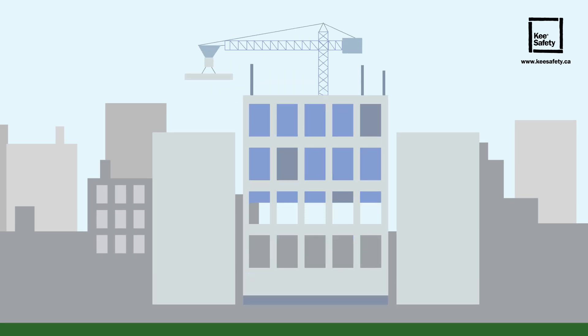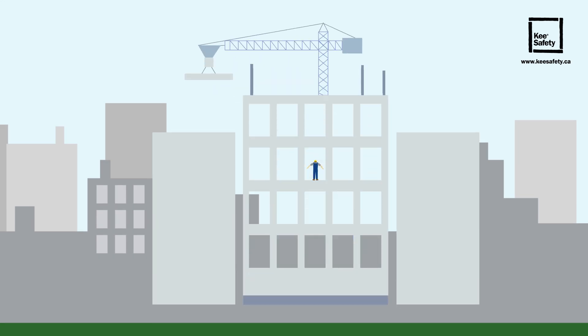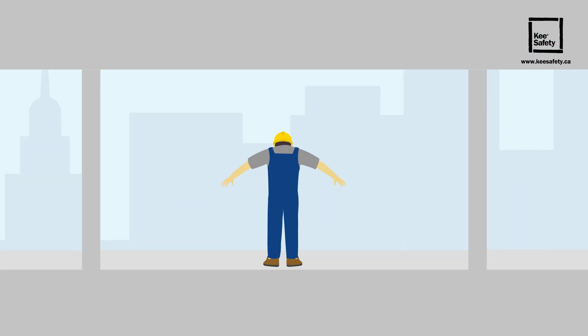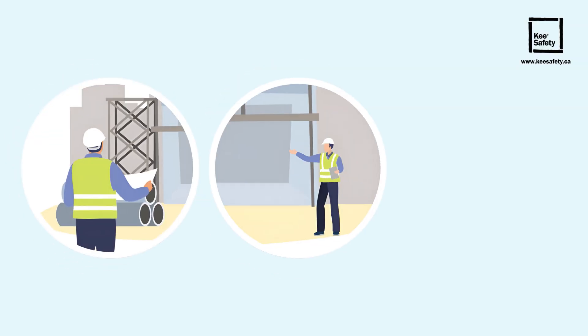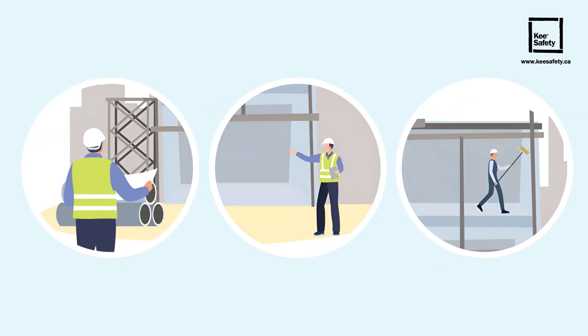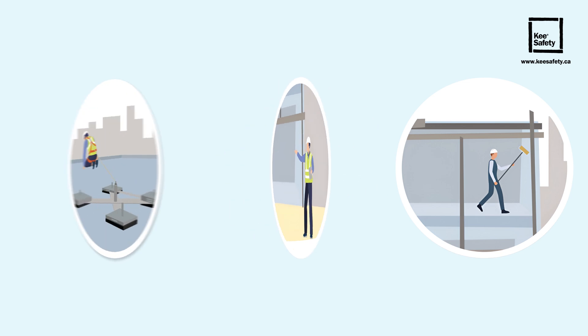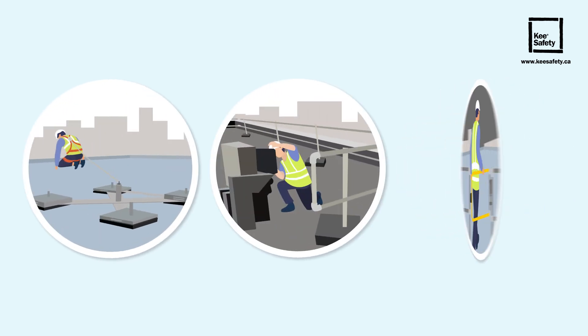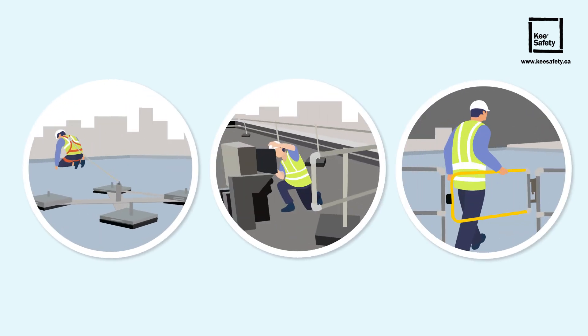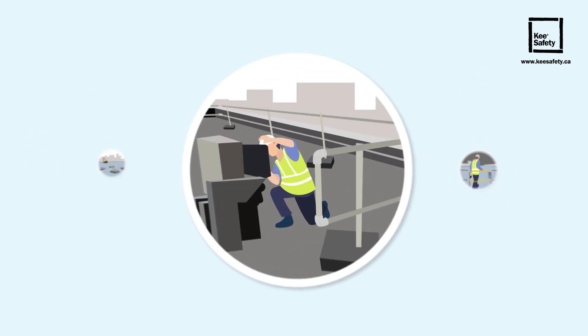Falls from height are a major cause of workplace fatalities and serious injuries, so ensuring optimum safety when working at heights is essential. If you're planning, managing, or working at height, you need to fully understand what control measures should be put in place to ensure the work can be carried out safely.